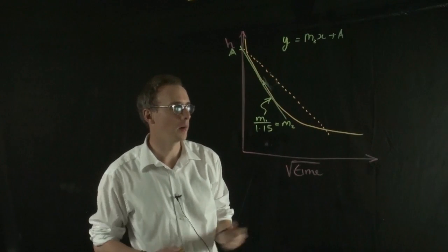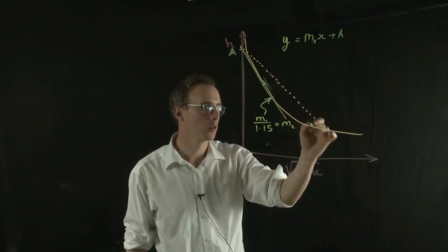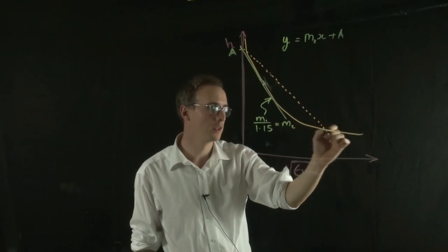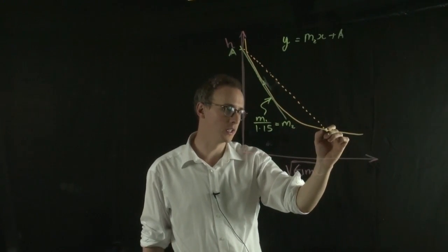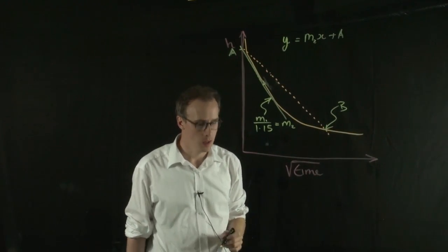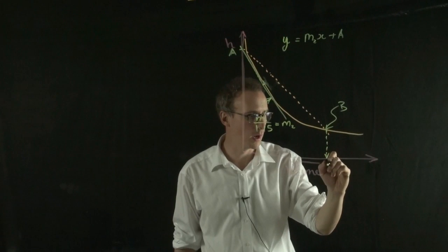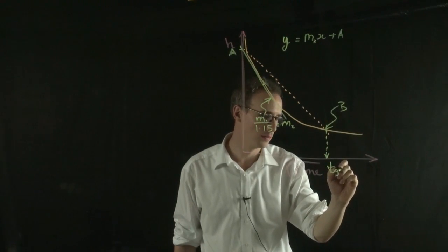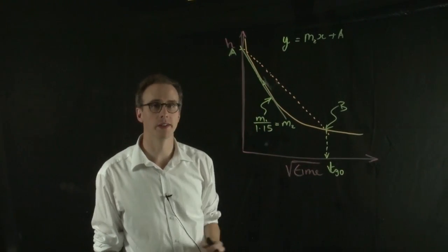So the point at which this new line crosses my compression curve, the original data, the point at which it crosses the curve, which is here, let's call that point B. That's equivalent to my T90 value, the time for 90% of consolidation.